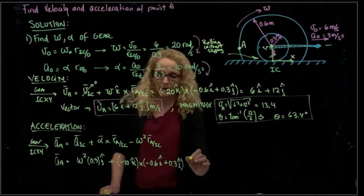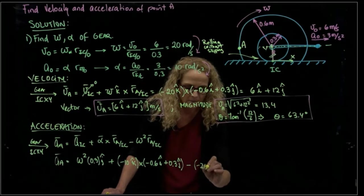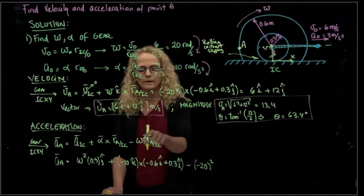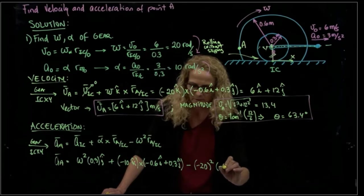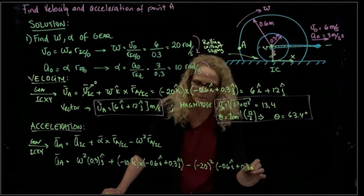And then we have the same vector that we used for the velocity. And then we have this component. The value is negative 20 squared. And the vector is exactly the same vector. That is negative 0.6 in I plus 0.3 in J.